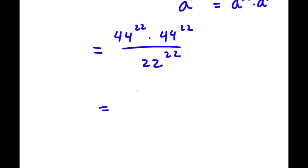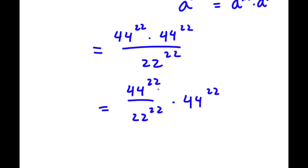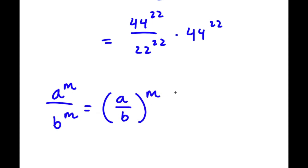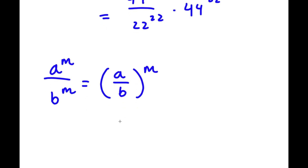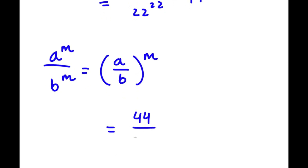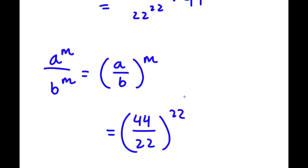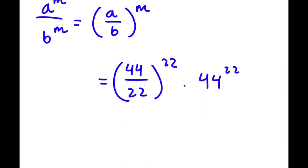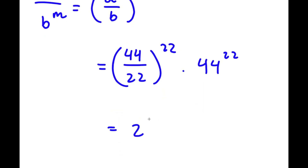This is the same as 44 to the power of 22 over 22 to the power of 22, times 44 to the power of 22. Using the property a to the power of m over b to the power of m equals a over b to the power of m, we get 44 over 22 to the power of 22, times 44 to the power of 22. Since 44 over 22 equals 2, I now have 2 to the power of 22 times 44 to the power of 22.